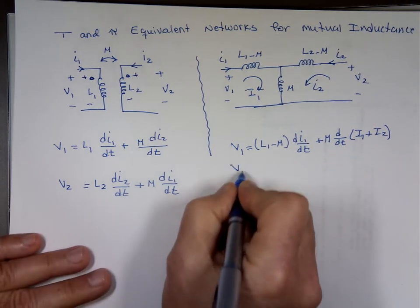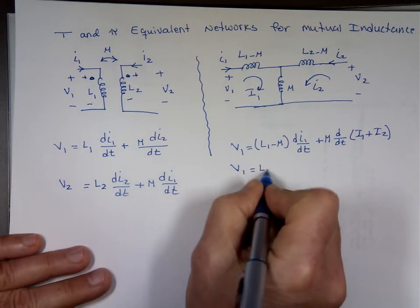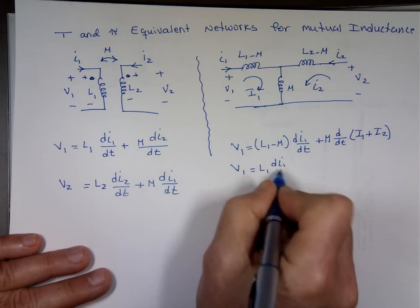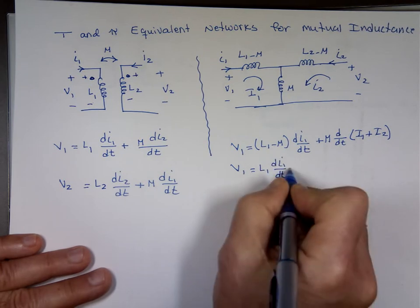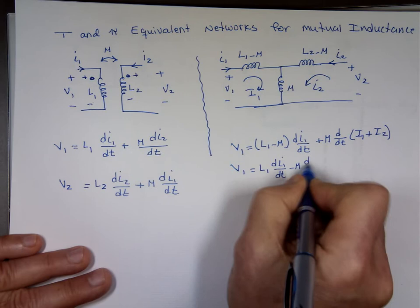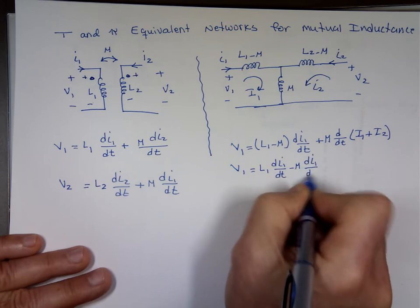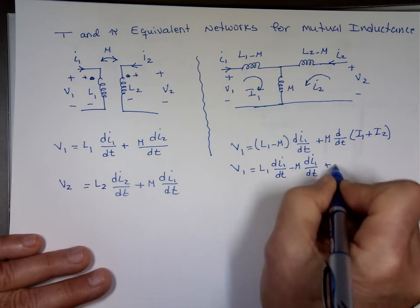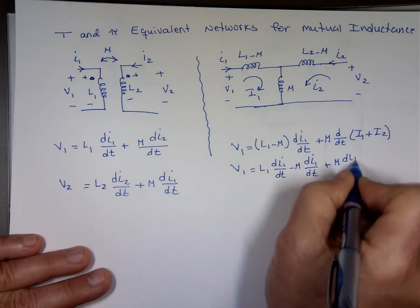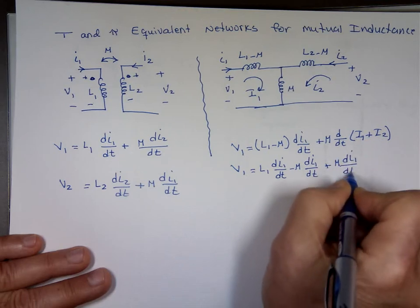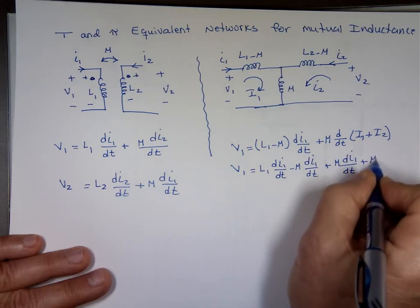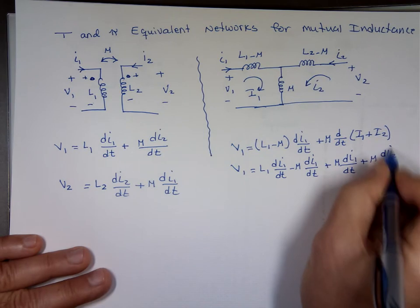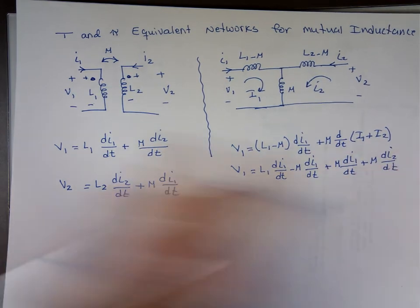So, if we simplify this or if we open it, that's L1 di1 dt minus m di1 dt plus m di1 dt plus m di2 dt.